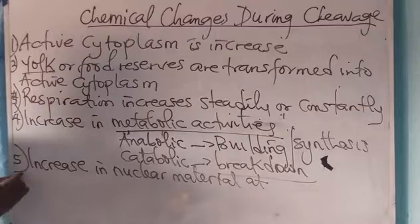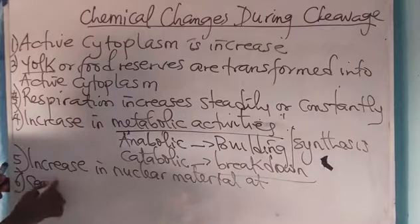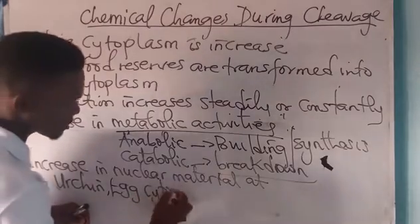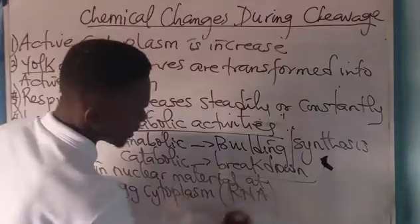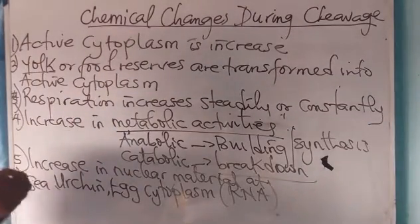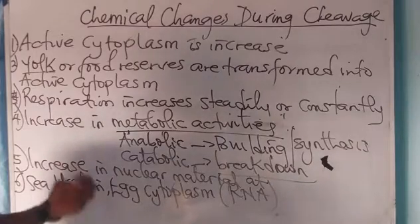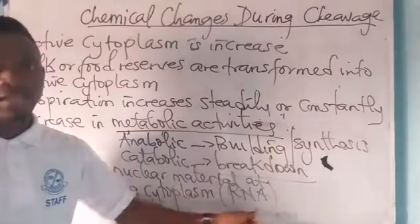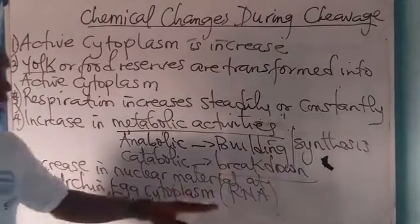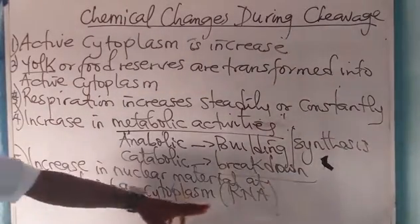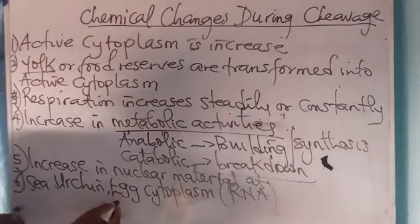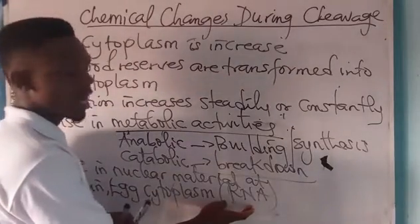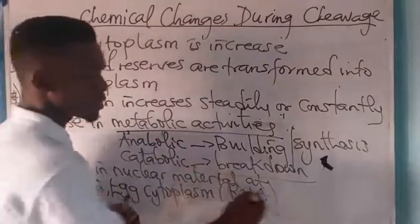Number six: an echinoderm called sea urchin. The egg cytoplasm of a sea urchin has large amounts of RNA — ribonucleic acid. However, as the process of development continues, this RNA disappears.